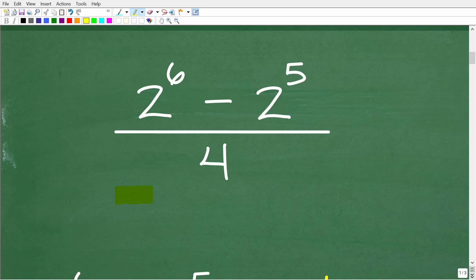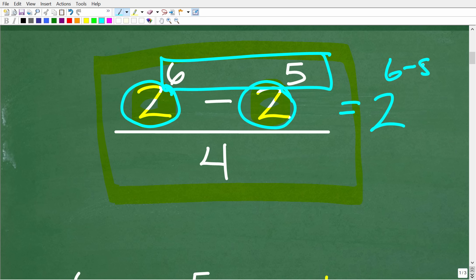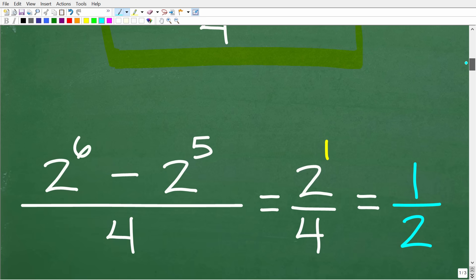So one approach to solve this problem could be the following. We have 2 to the 6th minus 2 to the 5th. So we have these powers up here, and they both have the base of 2. So maybe what we need to do is subtract these exponents. So in other words, 2 to the 6th minus 2 to the 5th is going to be equal to 2 to the 6 minus 5, which is 1.